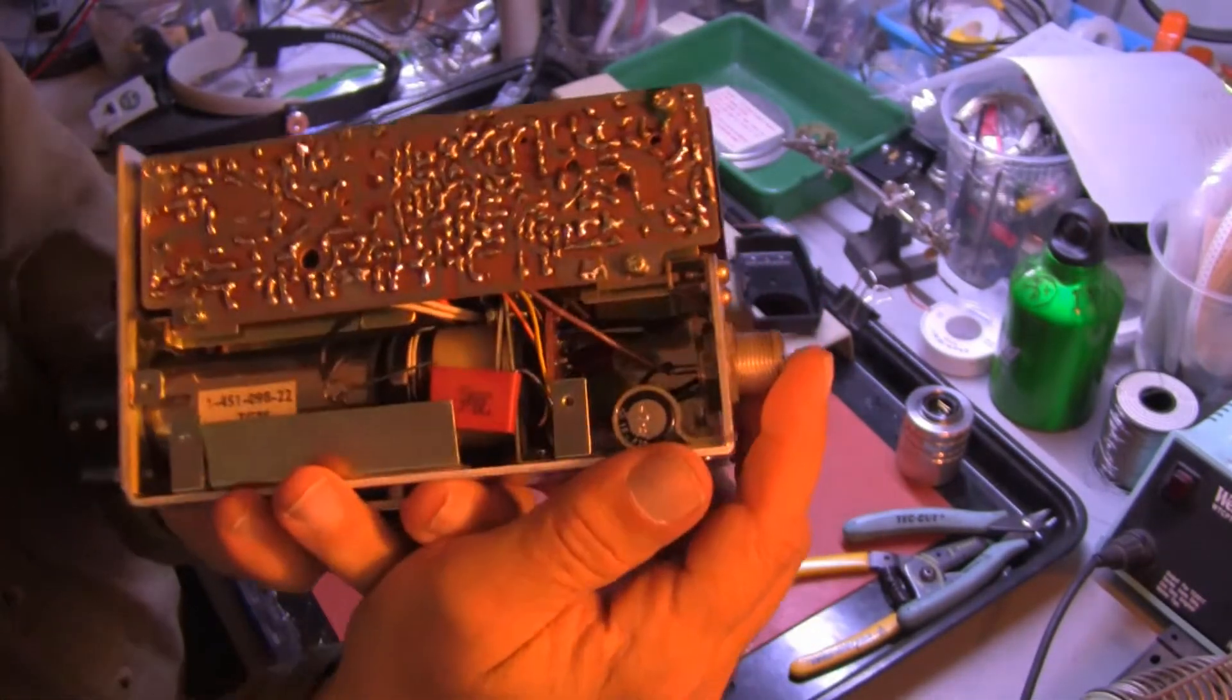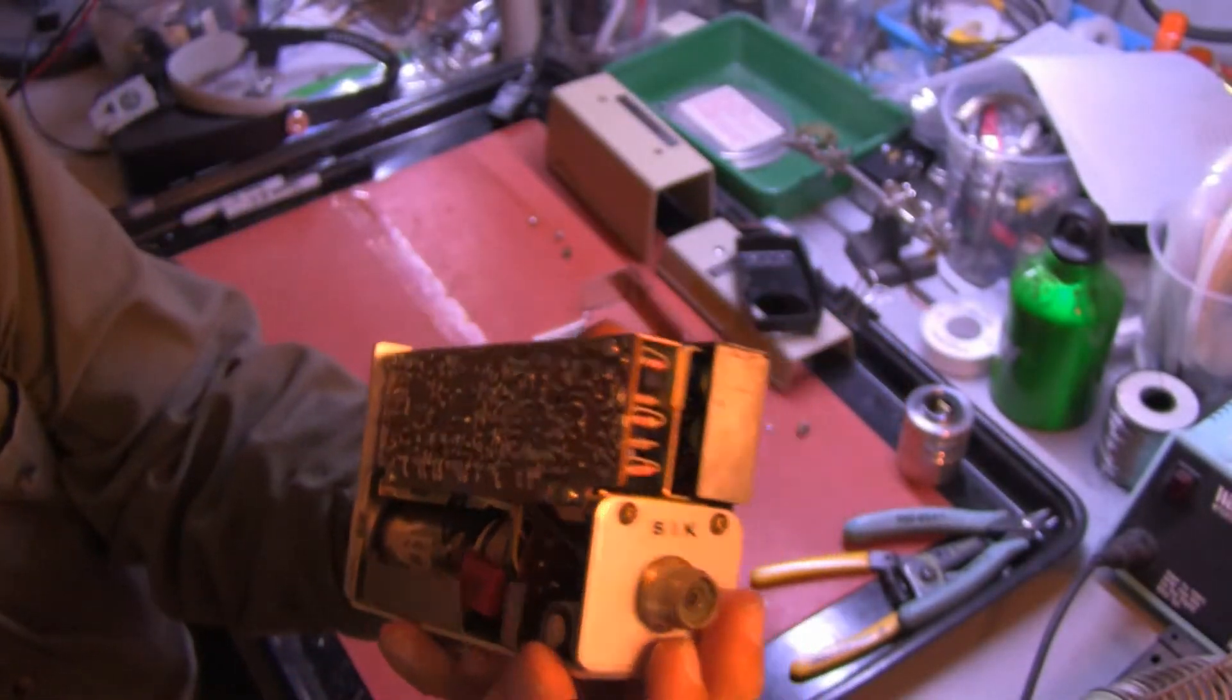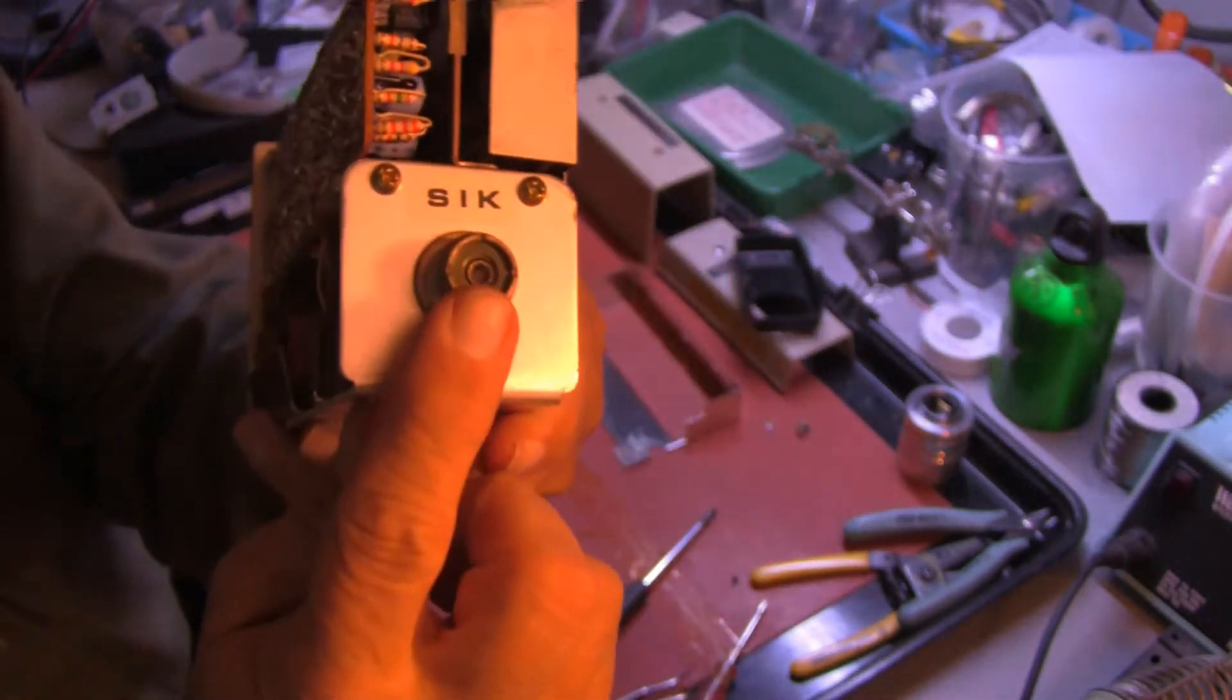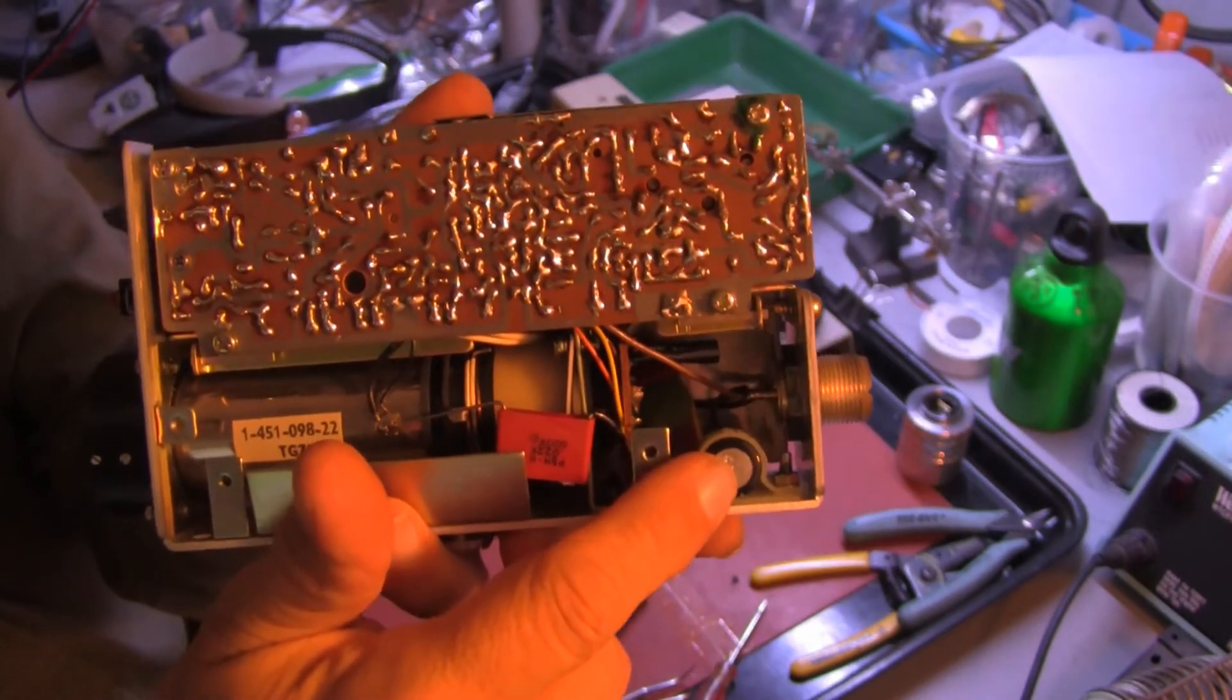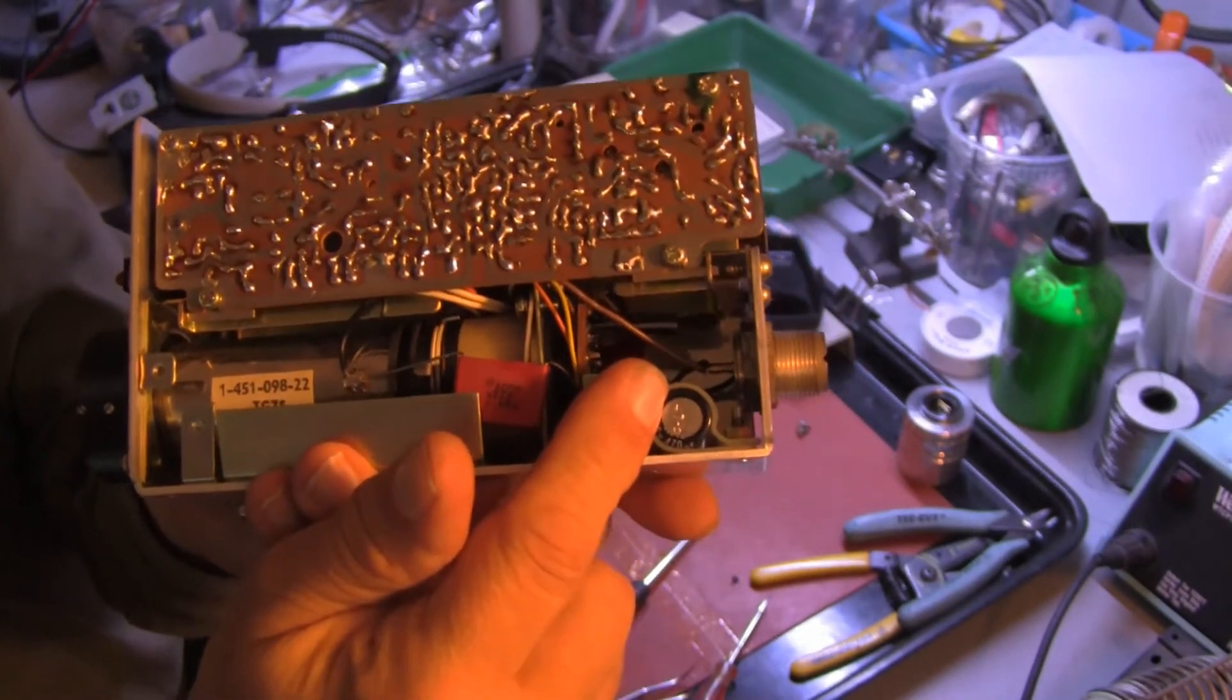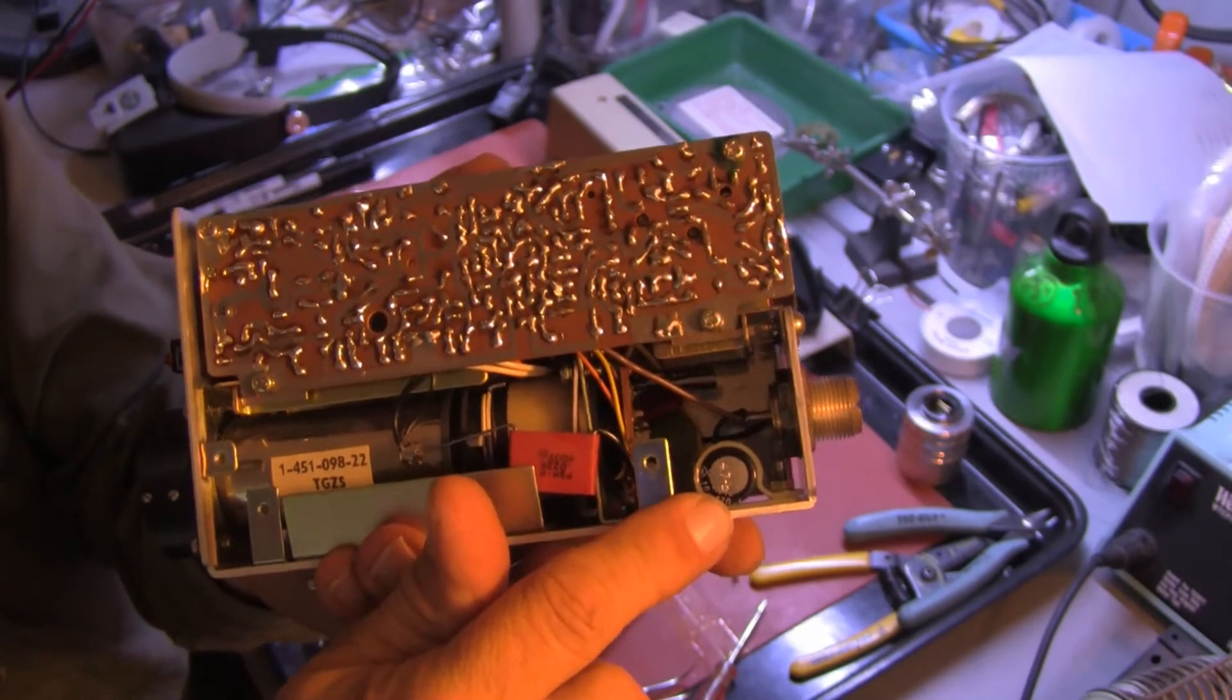So we have the connector coming in, and I don't know if it's visible, but there's a brown wire connected directly to the center pin of the jack, and this capacitor right here is connected to the center pin of the jack. The brown wire is the 12 volts DC, and the capacitor is AC coupling the video signal.